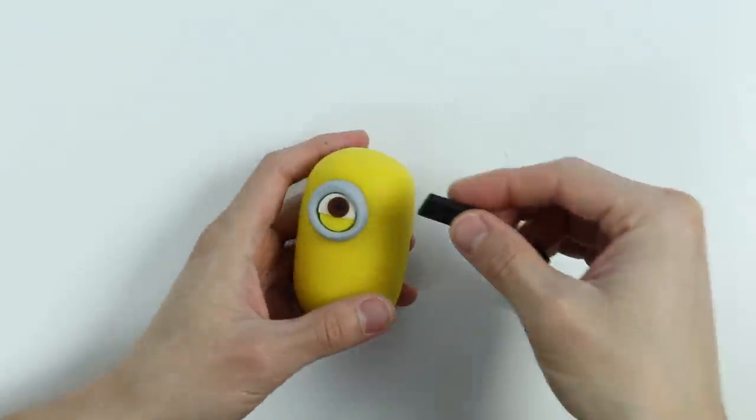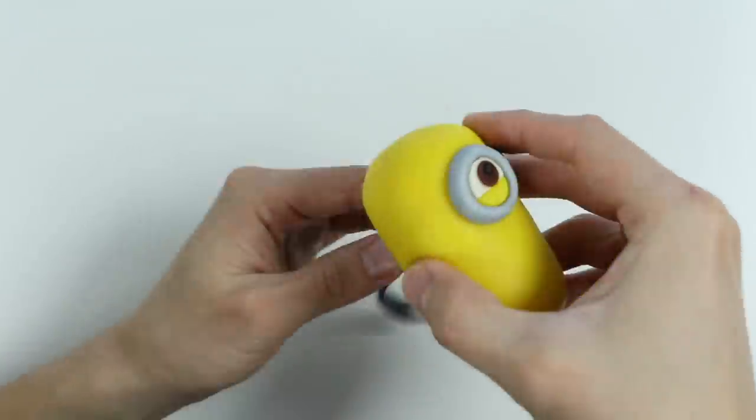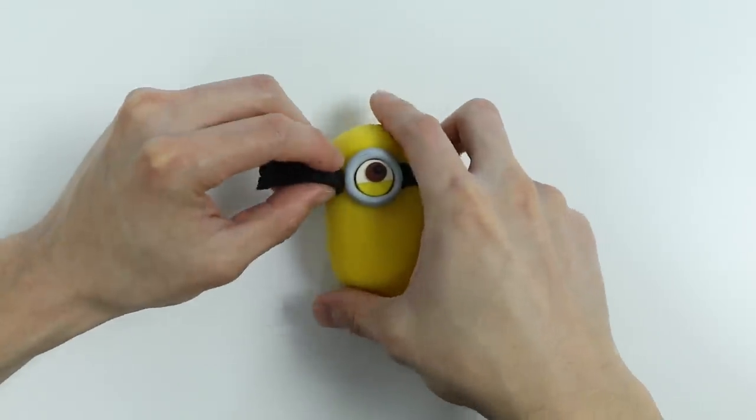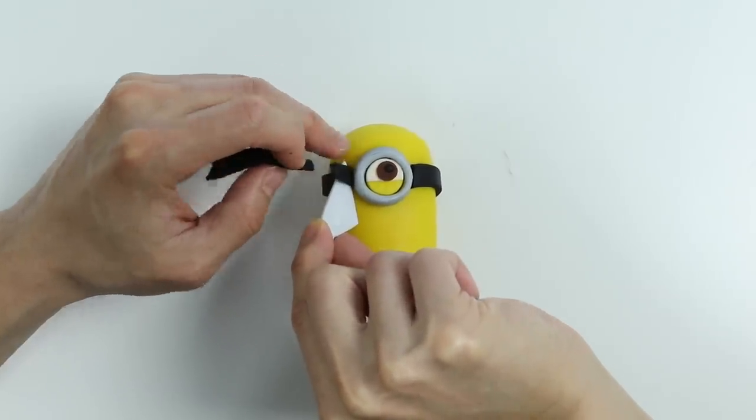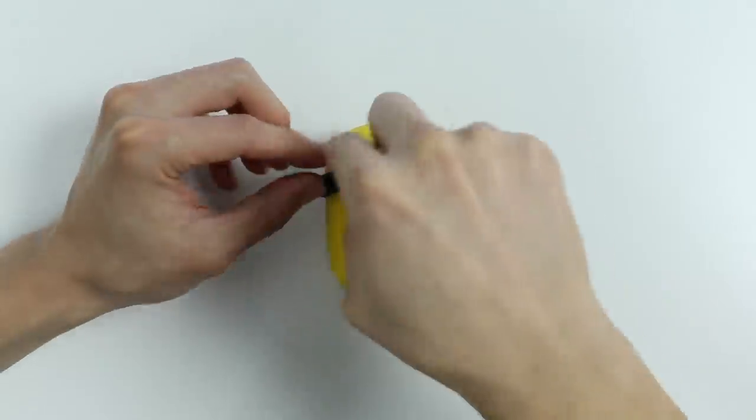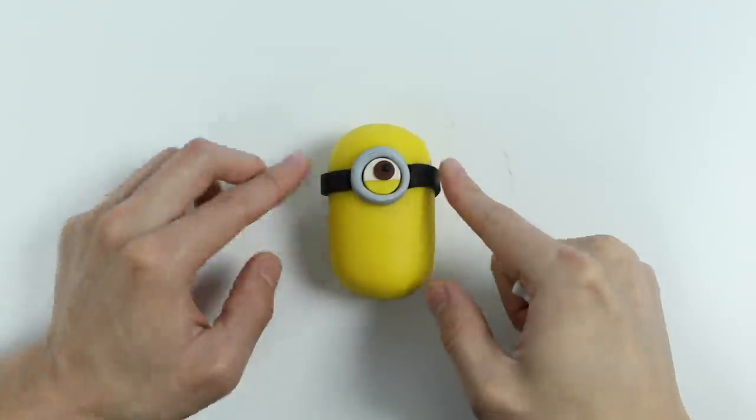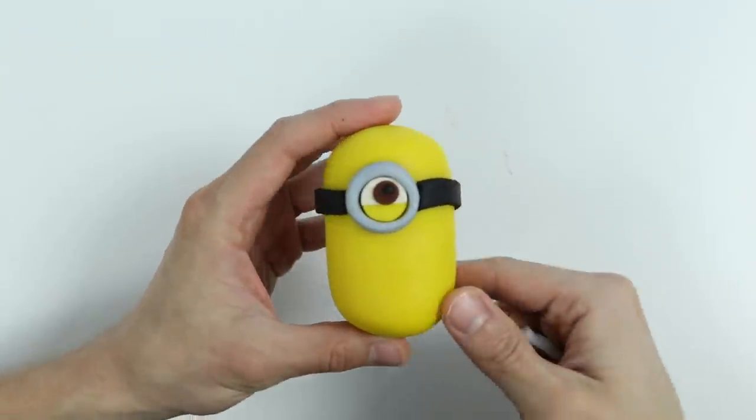Now let's wrap this strand around his head. Cut any extra Play-Doh. There we go! Now his goggle won't fall off.